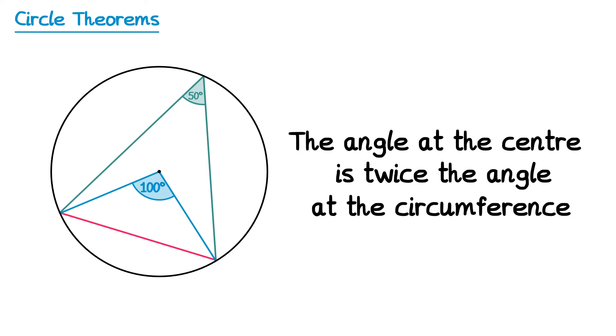You could also say it in reverse: the angle at the circumference is half of the angle at the centre. Once again this theorem still applies if we remove the chord, so sometimes you see it drawn without it.